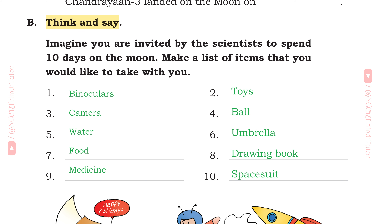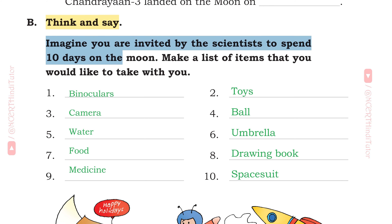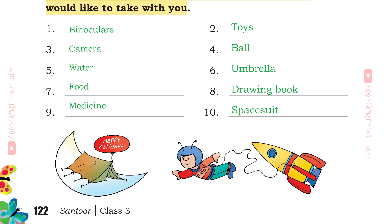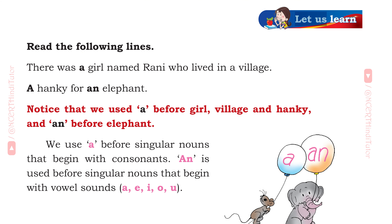Think and Say: Imagine you are invited by the scientist to spend 10 days on the moon. Make a list of items that you would like to take with you: 1st Binoculars, 2nd Toys, 3rd Camera, 4th Ball, 5th Water, 6th Umbrella, 7th Food, 8th Drawing Book, 9th Medicine, and last Space Suit.